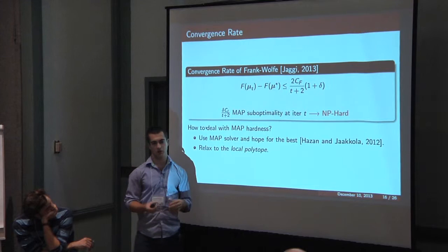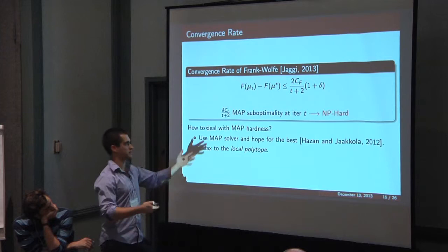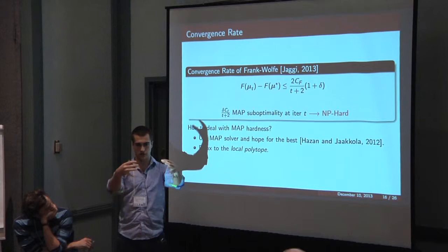So what I would suggest is basically you relax your sub-problems to the local polytope, which implies that you're relaxing the overall problem to the local polytope as well, which is a standard approximation for marginal inference. There's this nice parallelism between the constraint structures in the two problems.